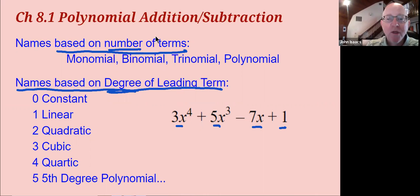If it only had three terms, it would be a trinomial, because it has three terms. Your different names for polynomials based on the number of terms are monomial for a single-term polynomial, such as like 2x to the third.